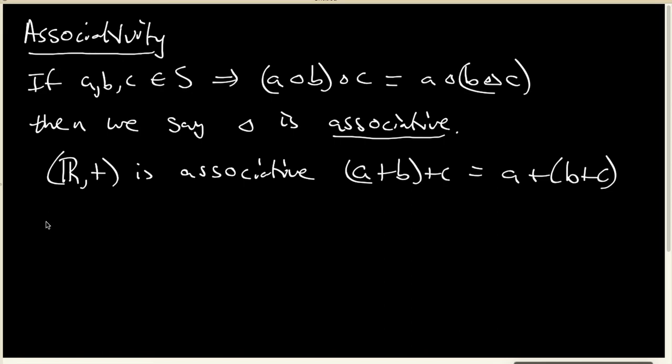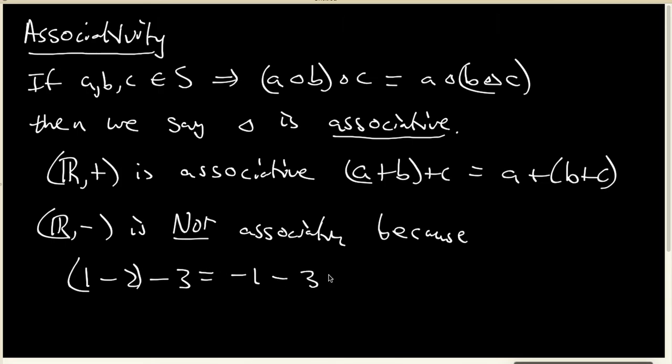But if we look at subtraction, R under subtraction is not associative. Because (1 minus 2) minus 3, if I put the parentheses here, that's negative 1 minus 3, which is negative 4. But if I put the parentheses over here, I get 1 minus negative 1, which is positive 2. These, of course, are not equal.